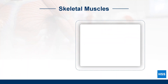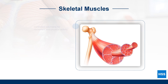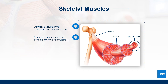Skeletal muscles are controlled voluntarily and are responsible for producing movement. Skeletal muscle is made up of three parts: fibers, fascia, and tendons. Tendons connect muscles to bones. When muscles contract or shorten, they move the bones they are attached to at the joints.